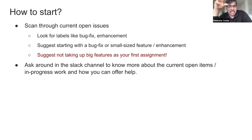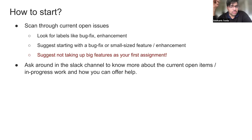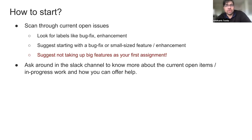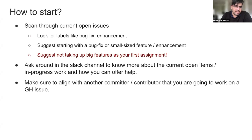You can also ask around in the Slack channel to know more about current open items or in-progress work and how you can offer help. Once you scan open issues and find something of interest in an area where you think you can contribute or want to learn, comment on the issue tagging at least the person who created it — that way someone will look at it in a day or two rather than no one looking at it for a week. Make sure to align with that person or a committer that you're going to work on that issue, and they can help assign it to you.